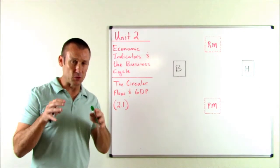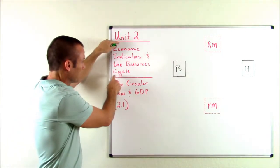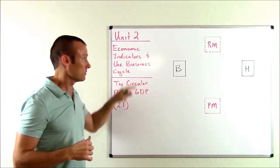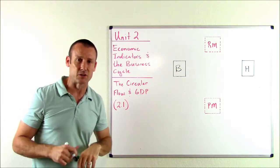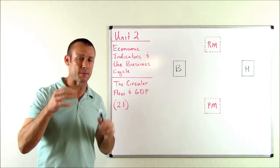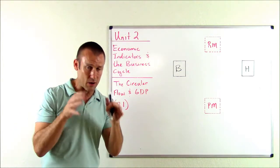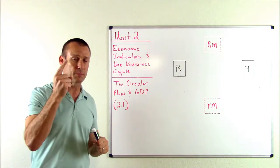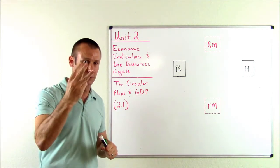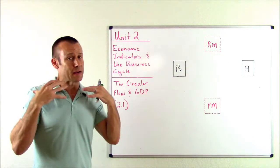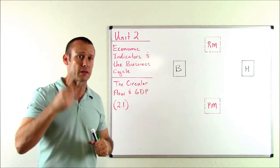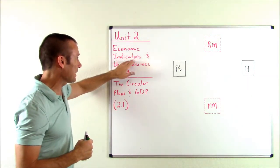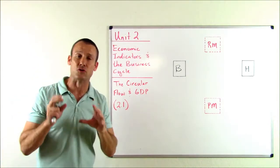Since this is the first subunit in Unit 2, let's talk a little bit about the title: Economic Indicators and the Business Cycle. Let's start with Economic Indicators. There are three things that macroeconomists care a lot about when looking at an economy: GDP, the Unemployment Rate, and the Inflation Rate. We can even say macroeconomists are obsessed with those three things — those are the big economic indicators we're going to be looking at in Unit 2.